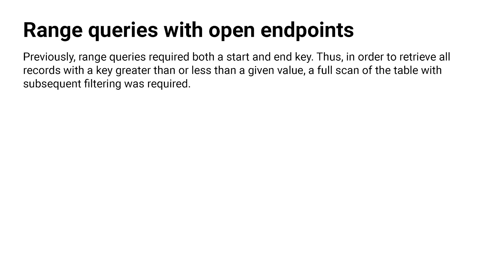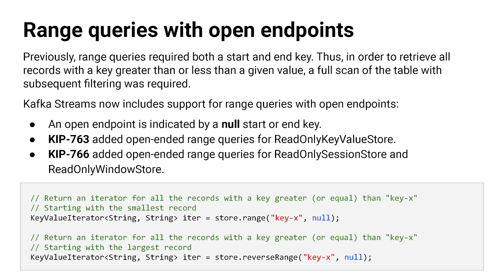Now for Kafka Streams. KIP 763 and KIP 766 come together to make it possible to query state stores for ranges of values, but now with open endpoints. This makes it possible to select a range greater than or less than a value. The functionality is available in both the read-only key value store and read-only session store.